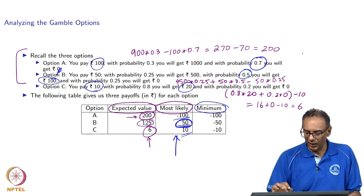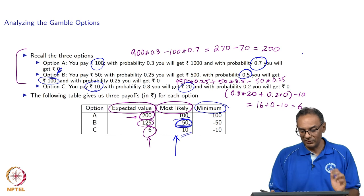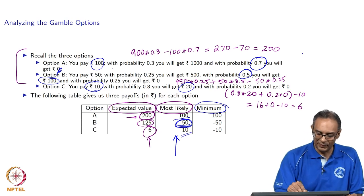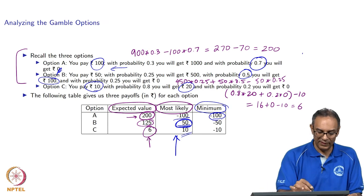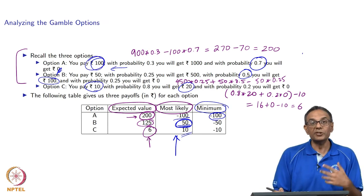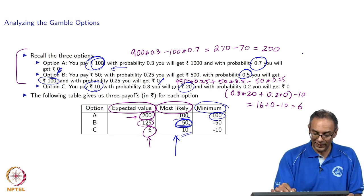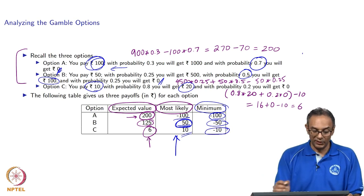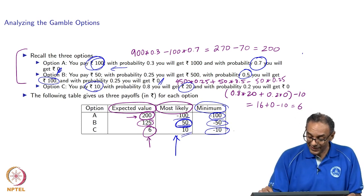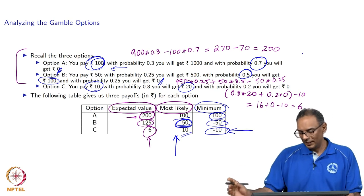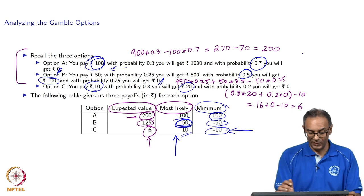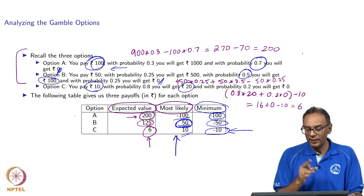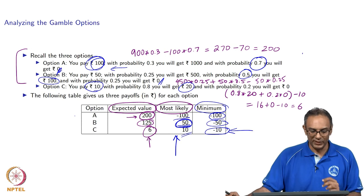The third criterion, popular for one-time decisions, is the conservative option: maximize the minimum payoff, or maximin. The worst that can happen in Option A is losing 100 rupees. In Option B, the worst is losing 50 rupees. In Option C, the worst is losing 10 rupees. So the best option under this criterion is Option C — you maximize the worst case. The best expected value option is A, the best most likely option is B, and the best minimum option is C.